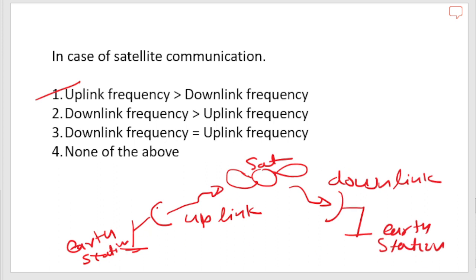The transmitting and receiving stations can be the same or different — it is not necessary that the signal returns to the same station. The satellite may transmit to a different earth station. The uplink frequency is the frequency at which the first earth station communicates with the satellite. The satellite transponder then converts the signal into another frequency and sends it down to the second earth station — that frequency is called the downlink frequency.